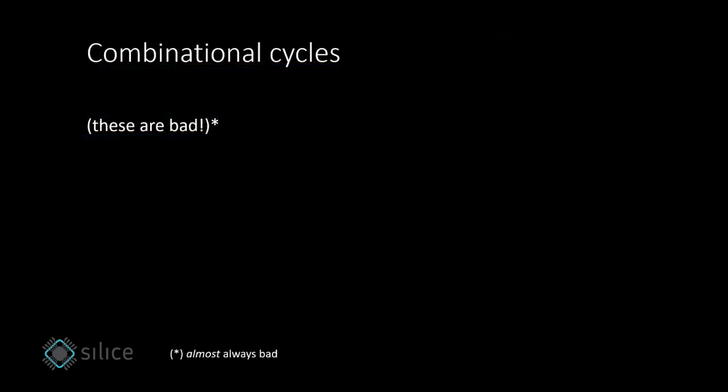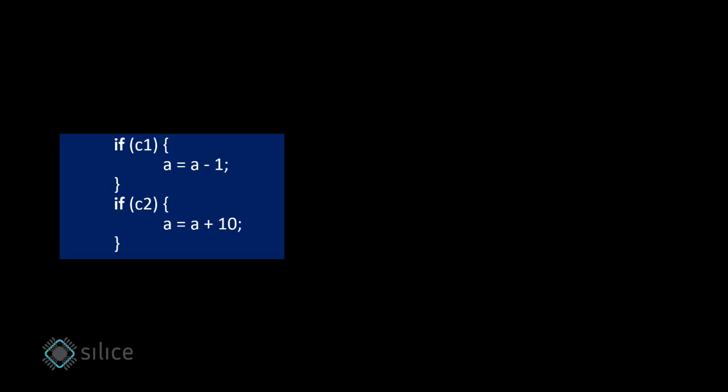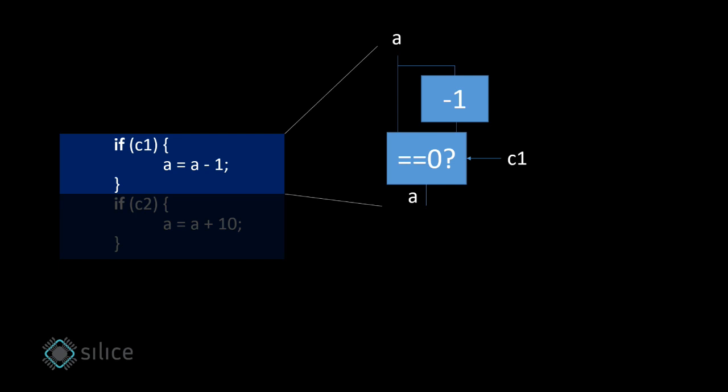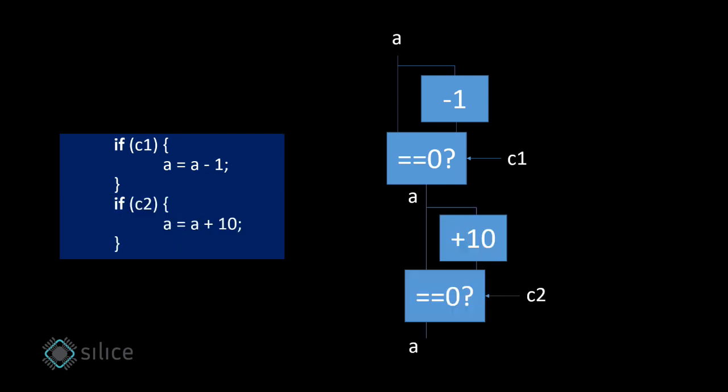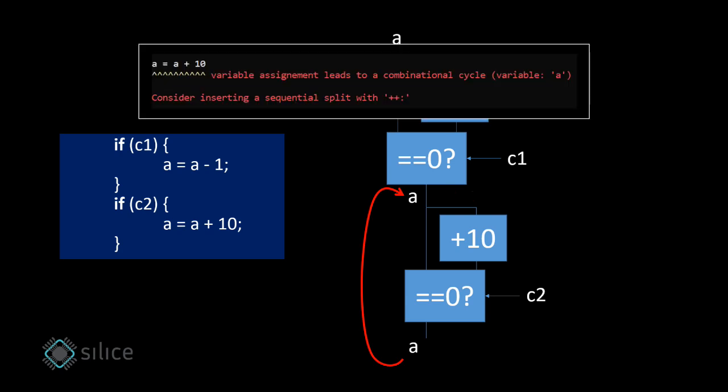Now let's talk about a difficulty that is known as combinational cycles. Let's consider this piece of Silice code. The first part is fine and will become this circuit. The second part reuses the value of A, which has just been updated. This again results in a loop in the circuit. The problem here is that Silice generates a single flip-flop for A, so it cannot deal with the second update. Silice will issue an error.